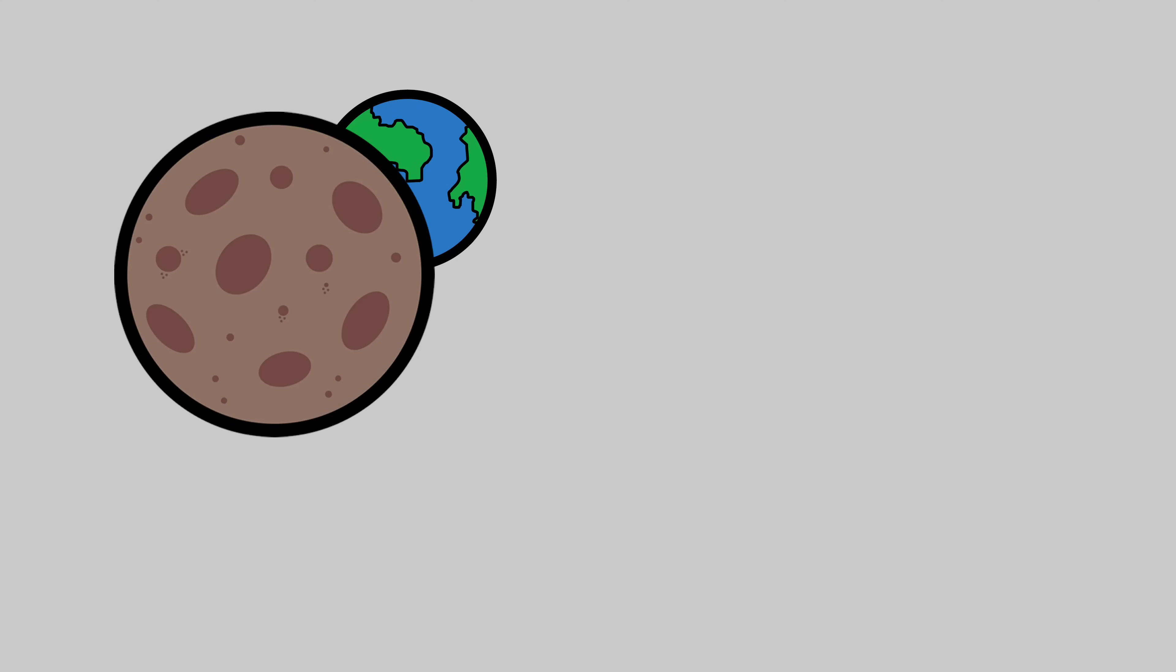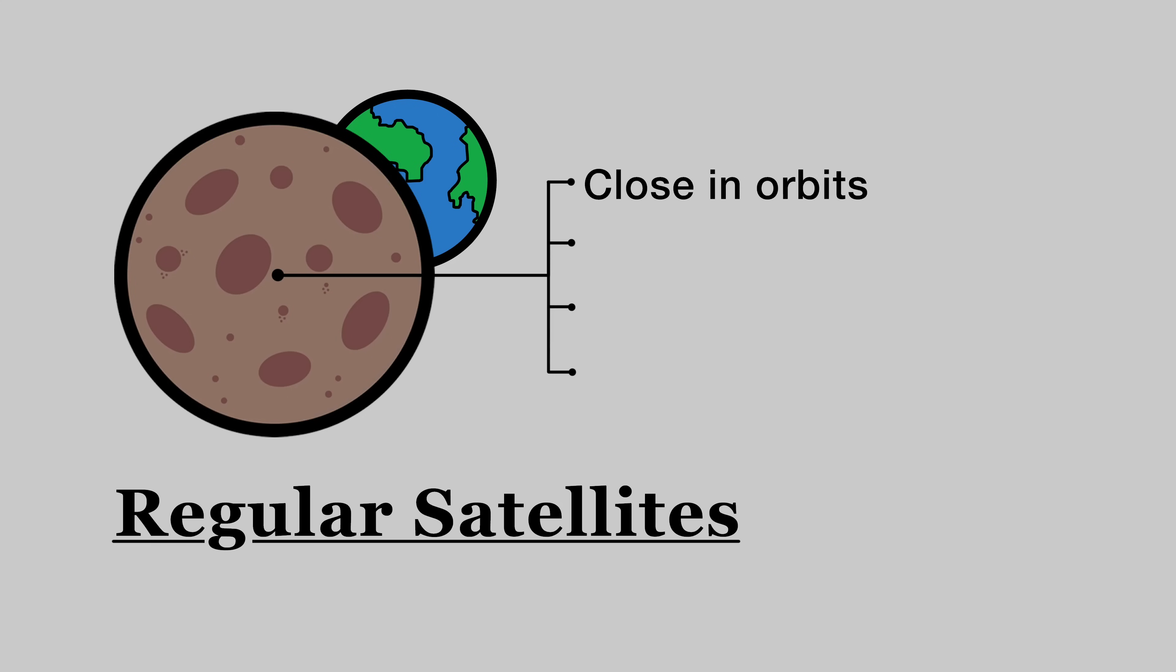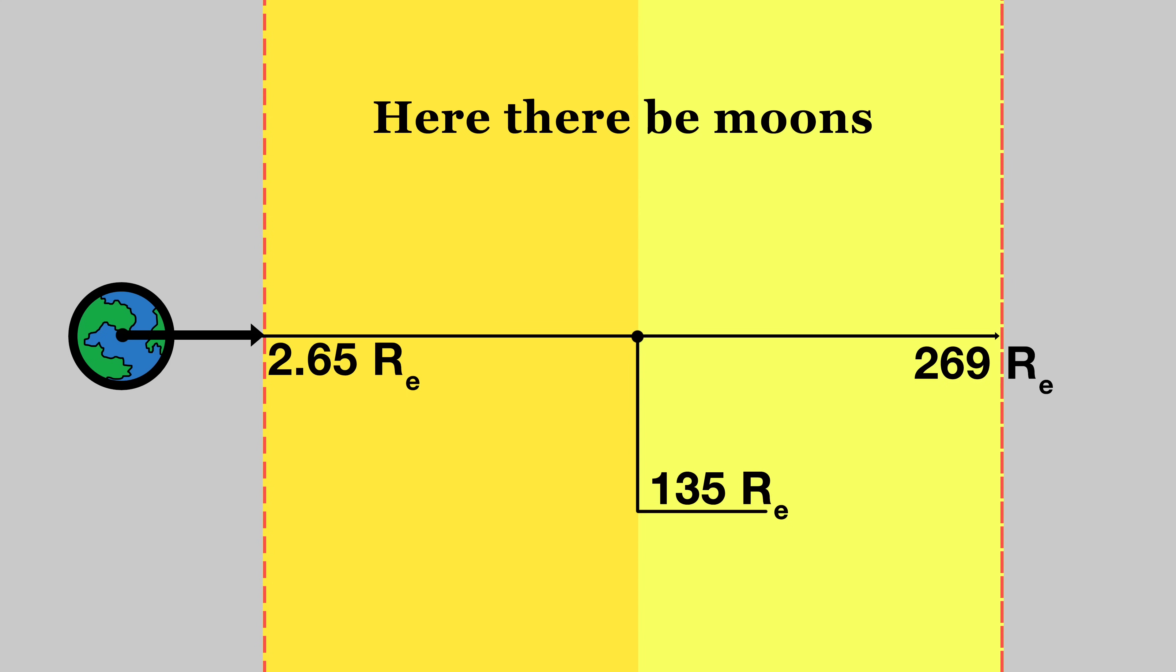In general, terrestrial planet moons will be what's known as regular satellites. That is, they orbit relatively close to the planet on prograde, uninclined, nearly circular orbits. Close to the planet generally means within half of the maximum value here. So I'll put my moon into orbit about 80 Earth radii out.